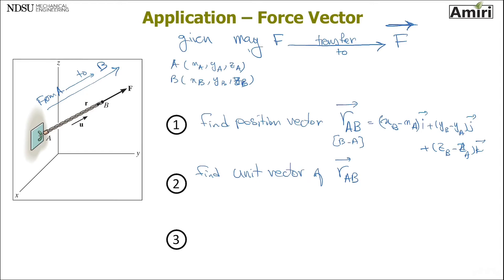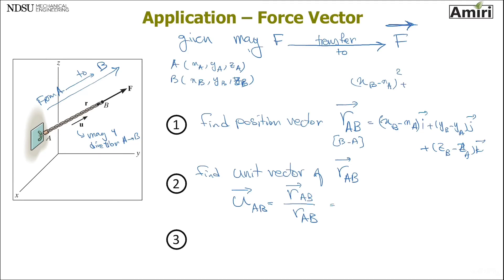Step two: find the unit vector of position vector r_AB. A unit vector has a magnitude of one in the direction from A to B. To find it, divide r_AB by its own magnitude. The magnitude of r_AB is the square root of (xB−xA)² + (yB−yA)² + (zB−zA)².